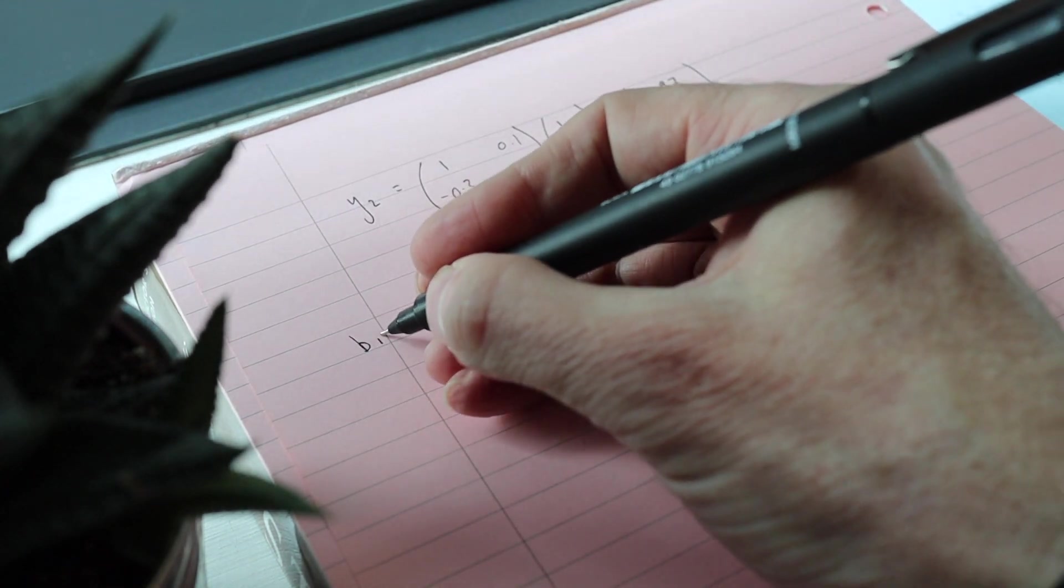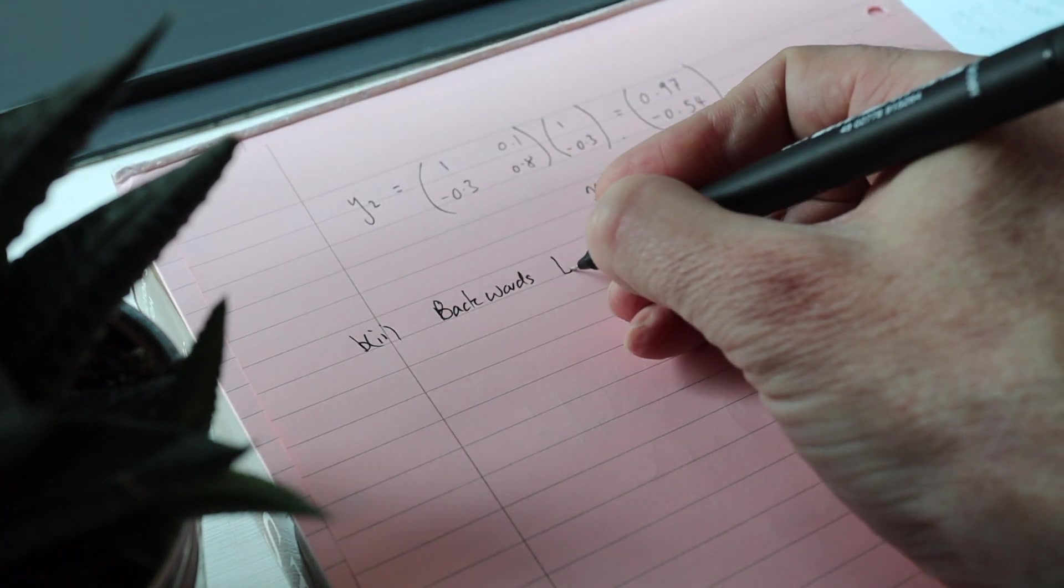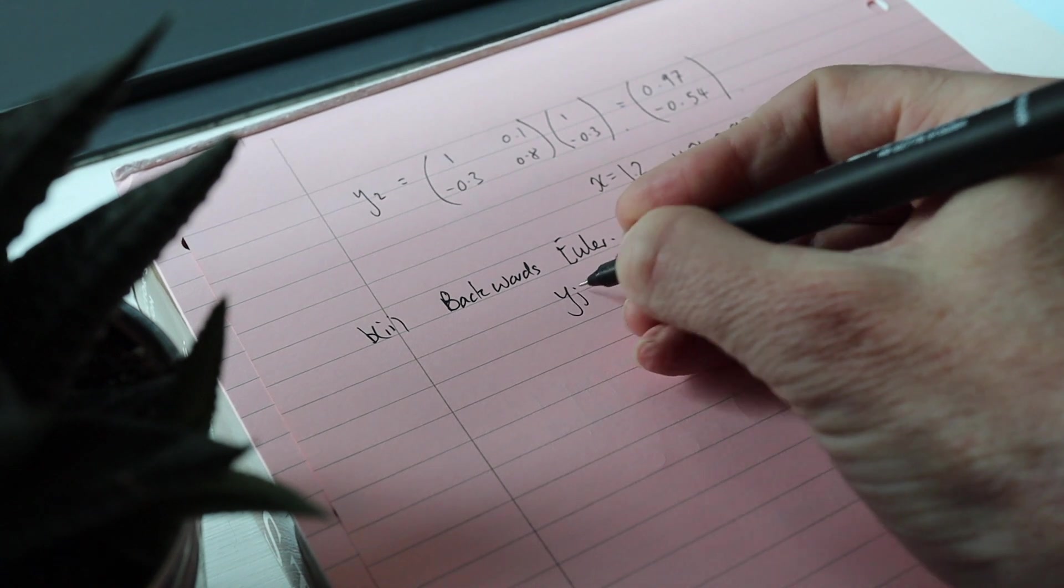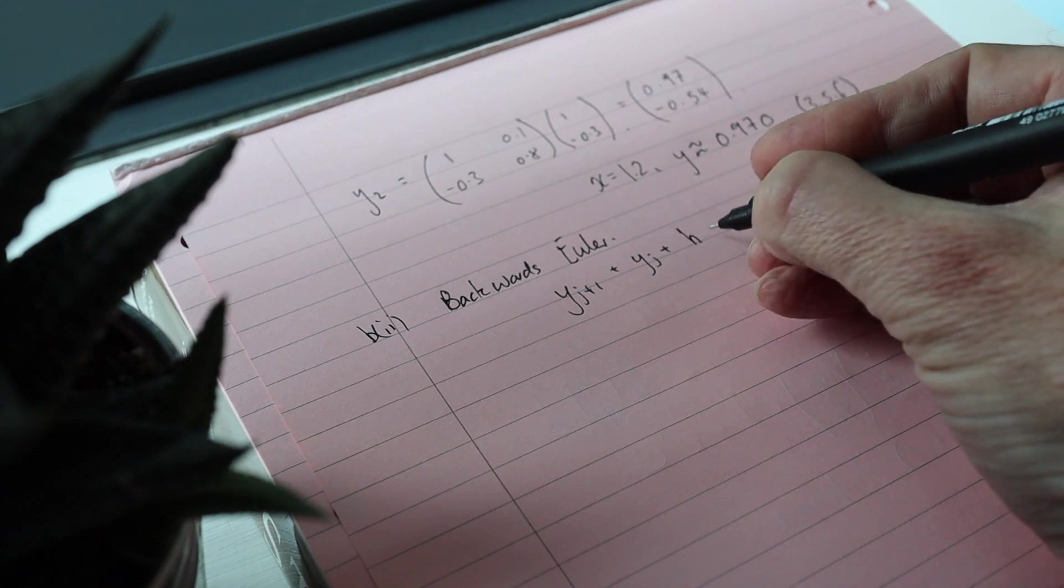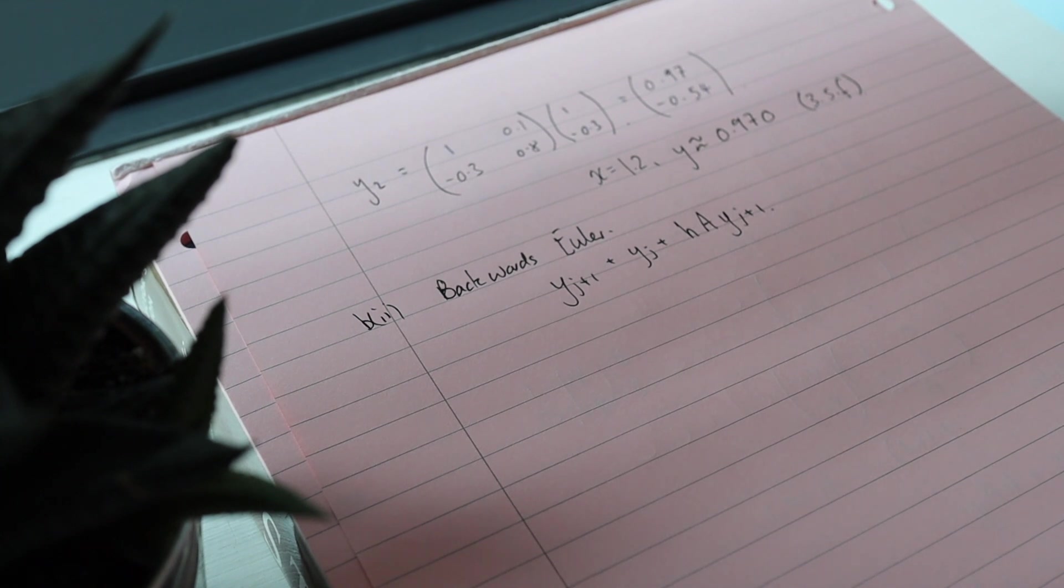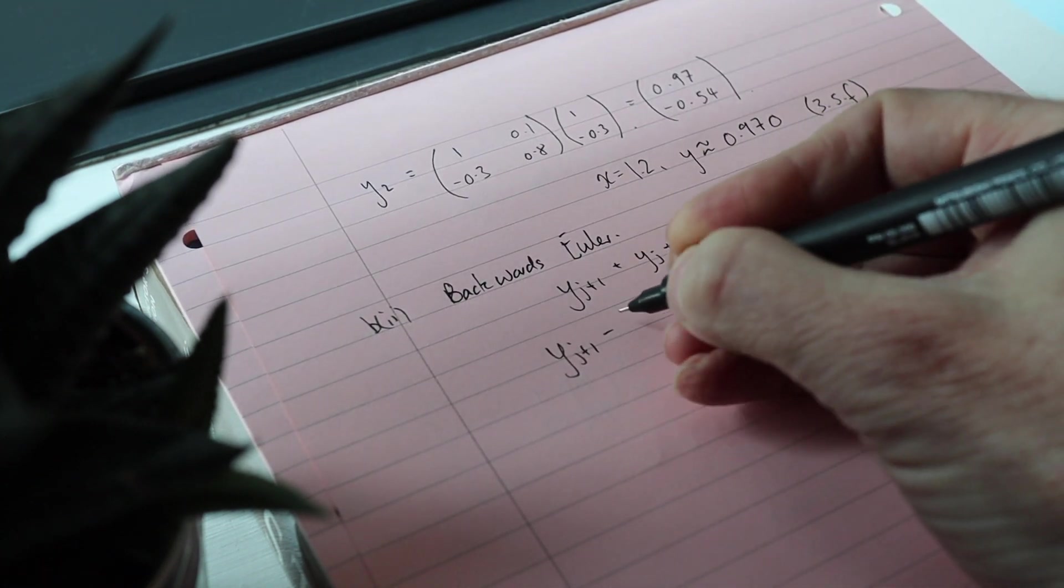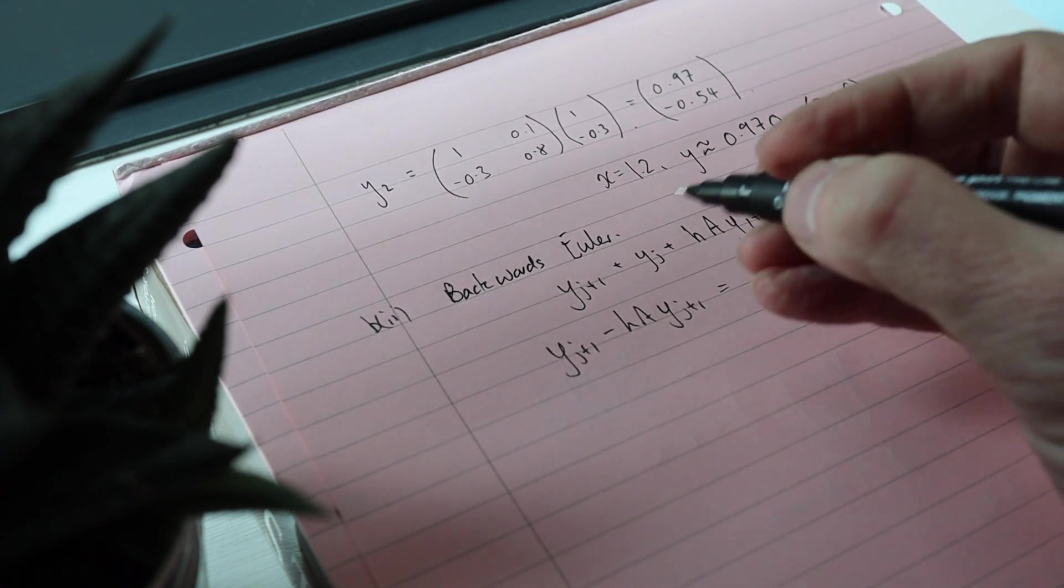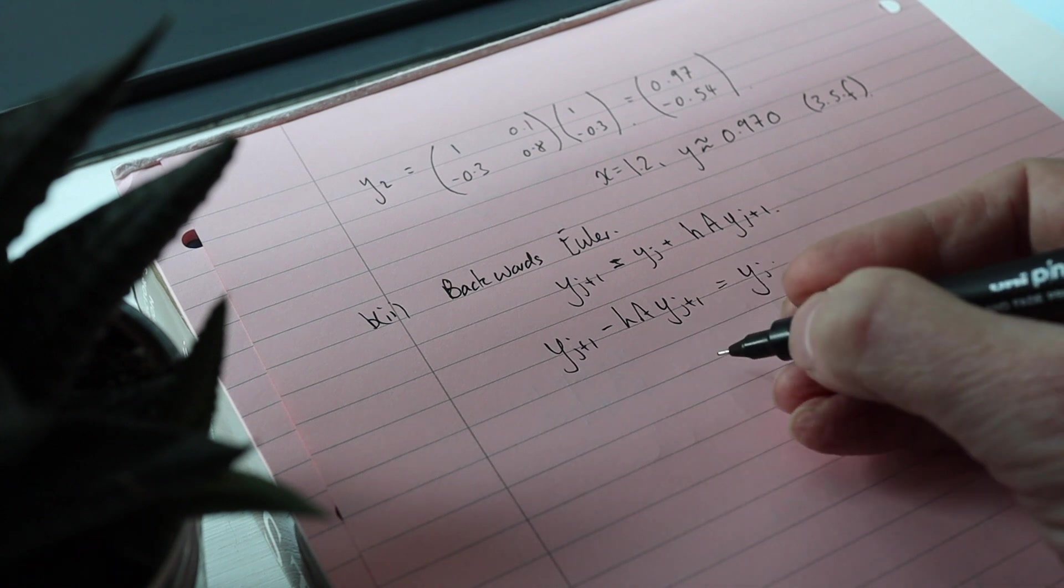Now for B part 2, it said use the backwards Euler. So for the backwards Euler we've got y j plus 1 equals y j plus h A times y j plus 1. So this is the one where we've got to rearrange to get y j plus 1 on its own. Sorry, that should have been an equals. Take out a y j plus 1 here, I minus hA.